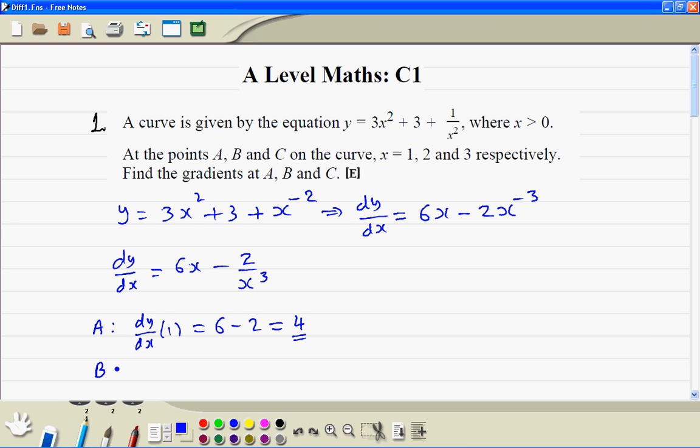Point B, we substitute x equal to 2, so that's 6 times 2 minus 2 divided by 2 cubed. So that's 12 minus 2 divided by 8, which is 1 quarter, that's 11 and 3 quarters.